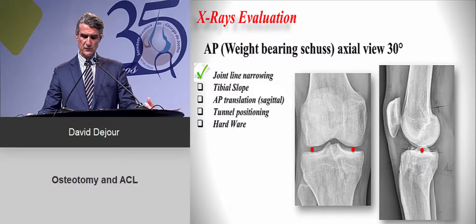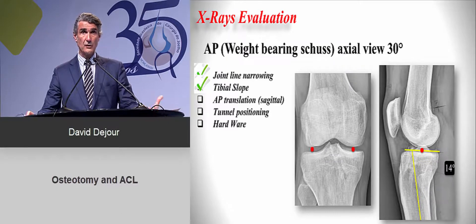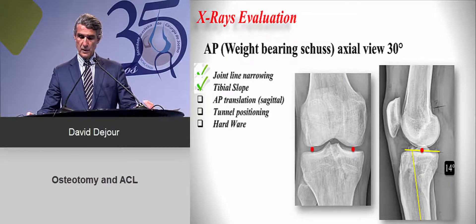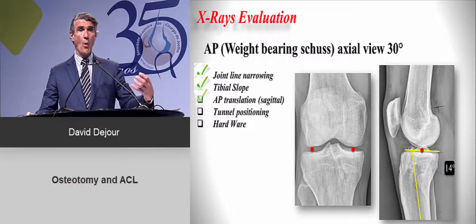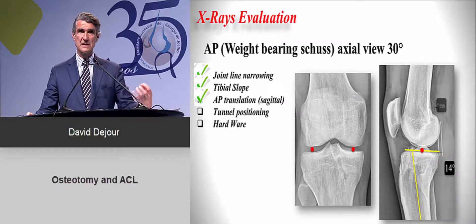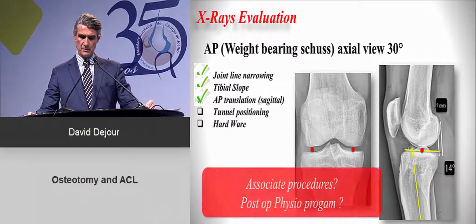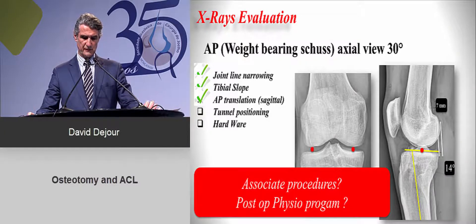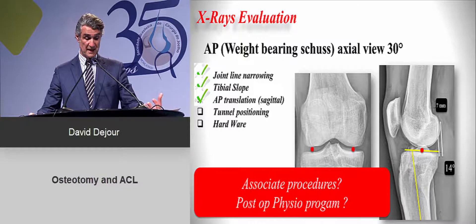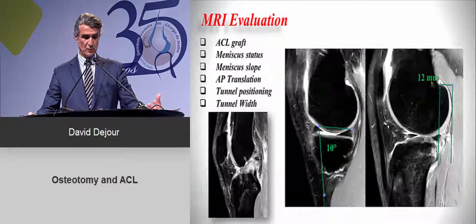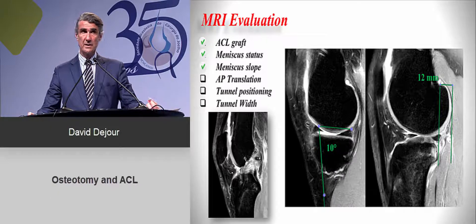On the sagittal view, you quantify the slope — the normal value is seven degrees — and you also quantify the anterior tibial translation while the patient is walking. This is a very important part of your screening.